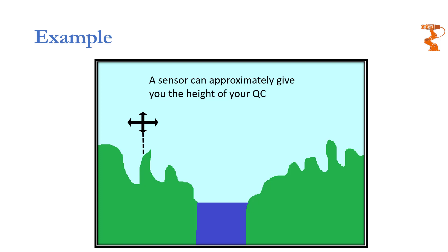Before starting the implementation of particle filter to track this quadcopter, we need to understand what we have and what we want to know. The first question: is there something we want to know? Yes — we want to know the horizontal location of the quadcopter. The second question: can we measure something related to what we want to know? Yes — we can measure the height of the quadcopter using the rain sensor. The last question: do we know anything about the relation between the observed quantity and the real thing? Yes — we have a map of the scenery that gives us information about the horizontal location of the quadcopter if we provide it with height data.